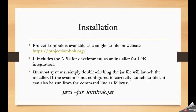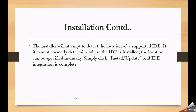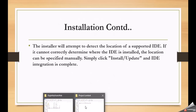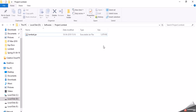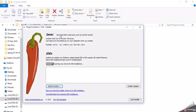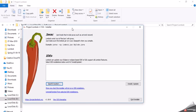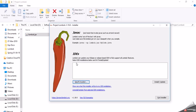Now we need to install that jar by double-clicking it. If double-click doesn't work, we can execute the command: java -jar lombok.jar using the command prompt. Once we execute that command or double-click the jar file, it will open the Lombok installation wizard. I'm double-clicking on this jar file — here it's giving us this window. By default it will search for IDEs installed in the system to add the Lombok plugin.